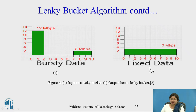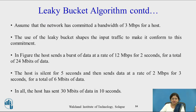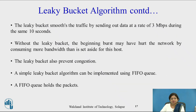Looking at the output diagram, a fixed 3 Mbps is transmitted across all 10 seconds — this is the regulated flow produced by the leaky bucket. In total, the host sent 30 megabits of data in 10 seconds. The leaky bucket smooths the traffic by sending at 3 Mbps during those same 10 seconds. Without the leaky bucket, the beginning burst may have consumed more bandwidth than was set aside for this host, harming the network. The leaky bucket thus also prevents congestion.